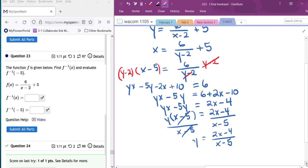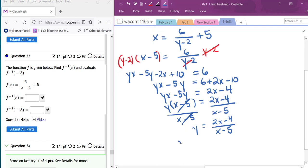So this will be my inverse function. And then I'm asked to find f inverse of negative 5. I will just substitute negative 5 into my x's.